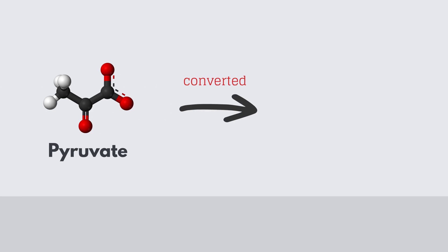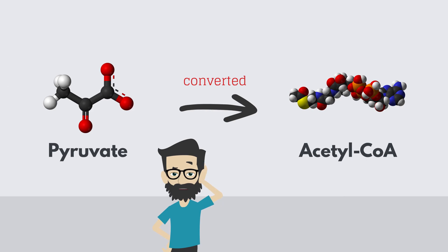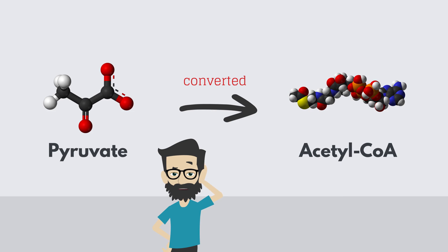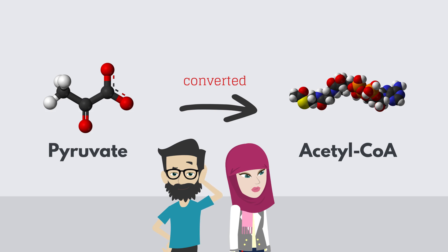Pyruvate is then converted into acetyl-CoA. Acetyl-CoA — it's a coenzyme. Remember that name. This conversion takes place in the mitochondria of the cell, the same place where the Krebs cycle occurs.